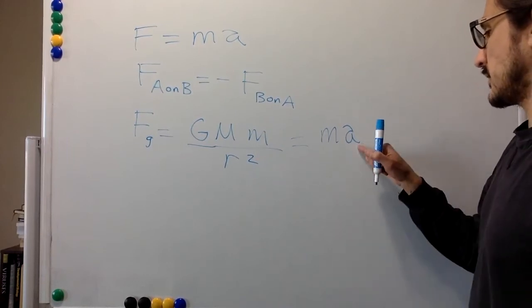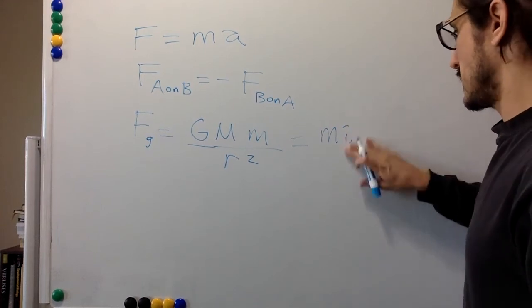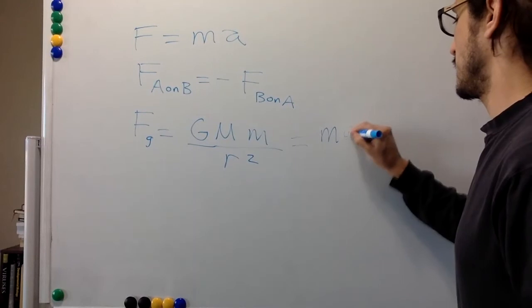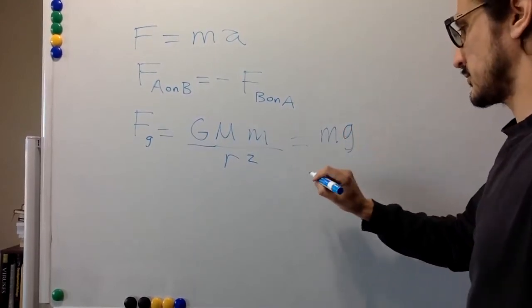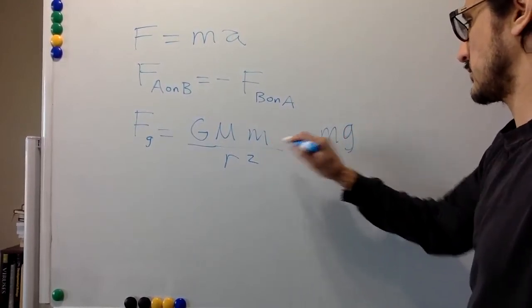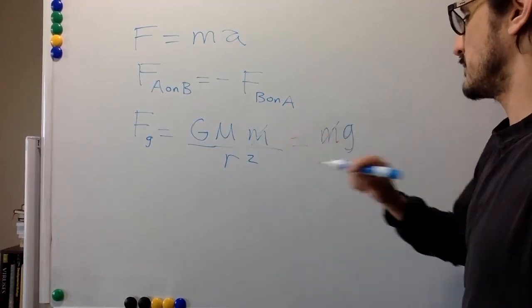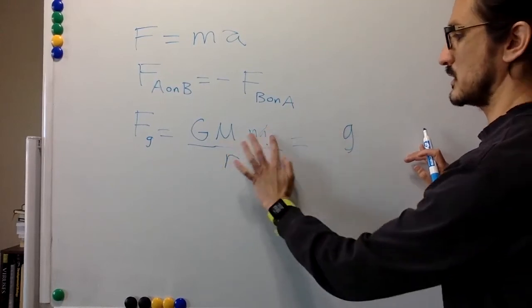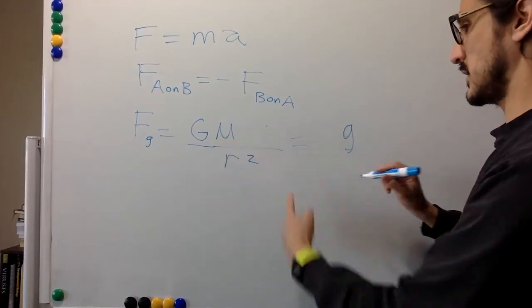All right. So then this acceleration is the acceleration due to gravity. We can cancel the masses on this side and on the other side.